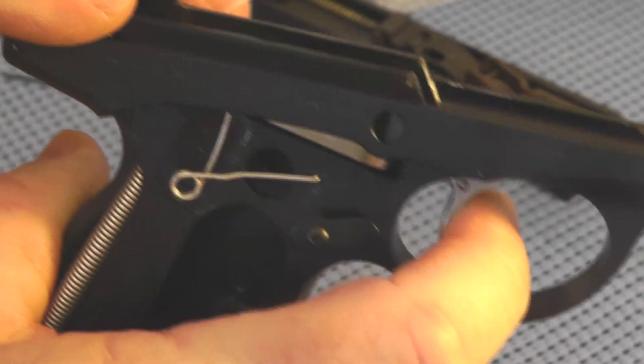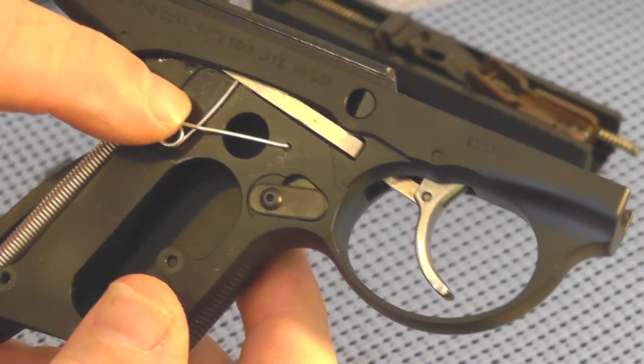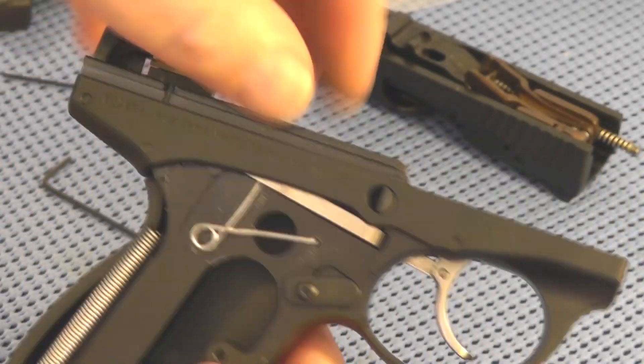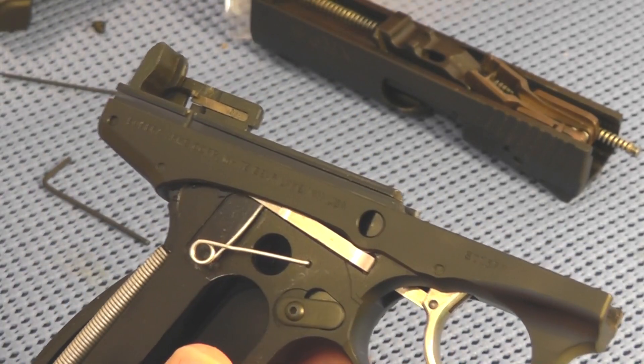There's a quick look at how that action works. That's the transfer bar spring there. I'll just put a piece of tape on the frame to keep from scratching the frame when I remove that screw.